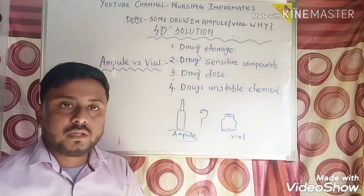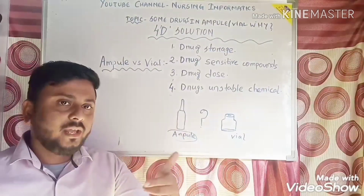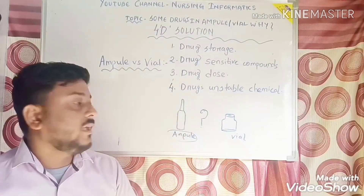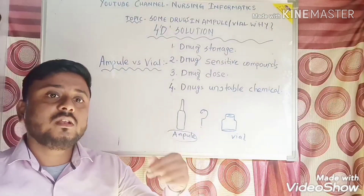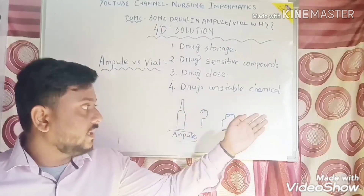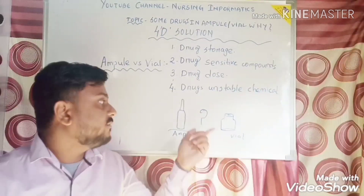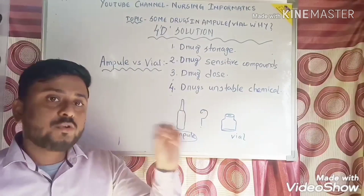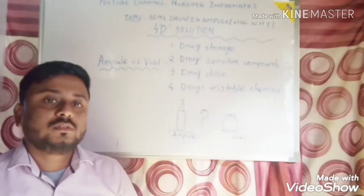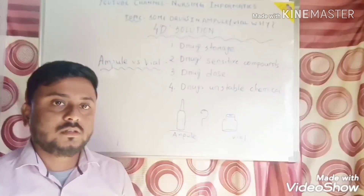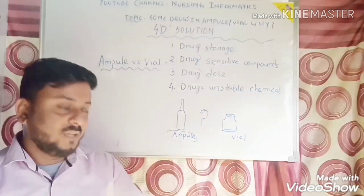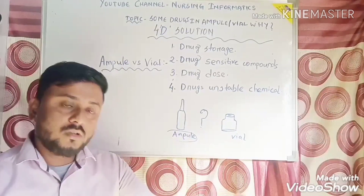The fourth reason is drug unstable chemicals. The chemicals used in the ampoule are unstable — when exposed to environmental oxygen, they will get damaged. But the chemicals used in vial drugs are more stable than those in ampoules. Even if they are exposed to oxygen, they do not easily get damaged. These are the four major reasons why we keep some drugs in the ampoule and some drugs in the vial.